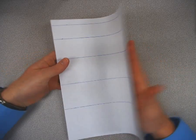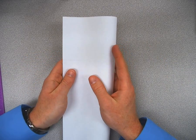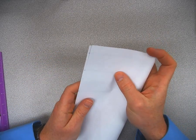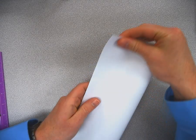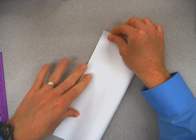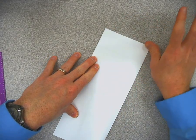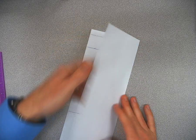All right, so once we have our lines drawn, we're going to do a hot dog fold right down the middle. So we're just going to fold it in half, get it lined up. And then we're going to take a pair of scissors and we're going to cut just part of the paper to make flaps.